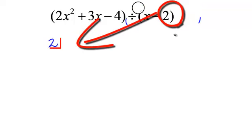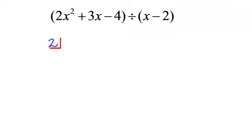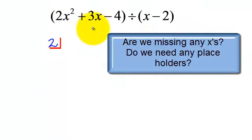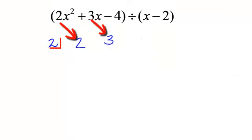So let's get to work. Do I need any placeholders? I have 2x squared, 3x to the first. I do not need any placeholders. So I just write the coefficients: 2, 3, negative 4.